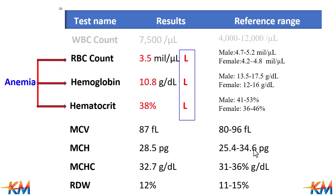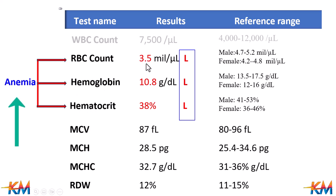If the three parameters, or one of them, is decreased, then anemia is present, because the three parameters give an indication about the efficiency of oxygen transport by red blood cells in the body. The decreased result is shown in red color with the letter L beside it, which is an abbreviation for low.